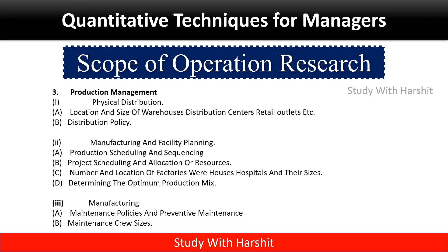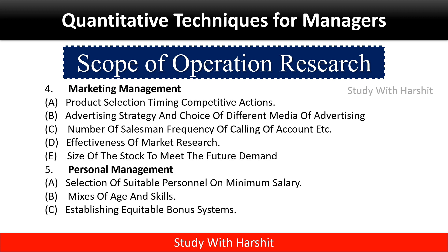Production management — physical distribution: location and size of warehouses, distribution centers, retail outlets, and distribution policy. Manufacturing and facility planning: production scheduling, project scheduling and allocation of resources, number and location of factories, warehouses and hospitals and their sizes, manufacturing maintenance policy and preventive maintenance.